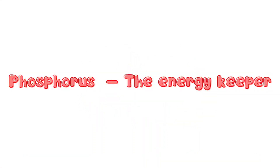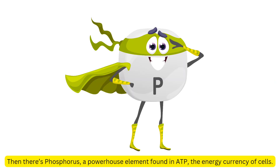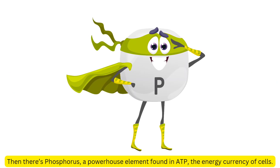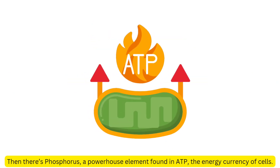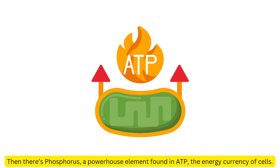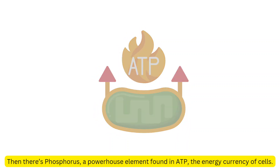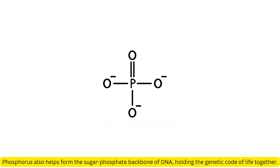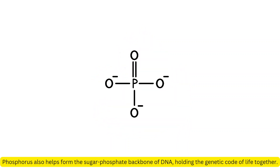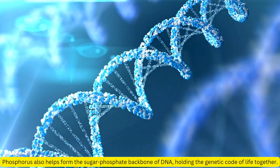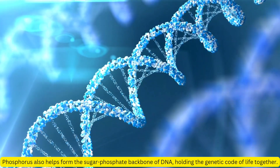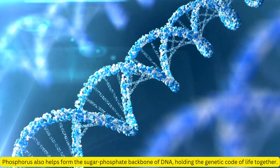Phosphorus — the energy keeper. Then there's phosphorus, a powerhouse element found in ATP, the energy currency of cells. Phosphorus also helps form the sugar phosphate backbone of DNA, holding the genetic code of life together.